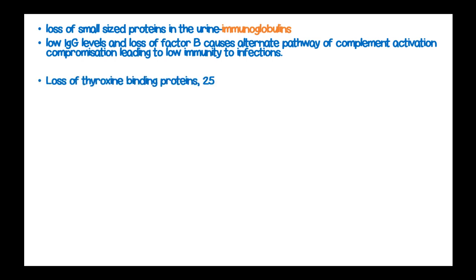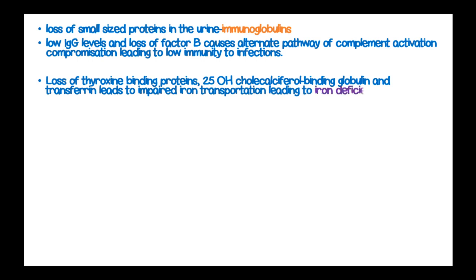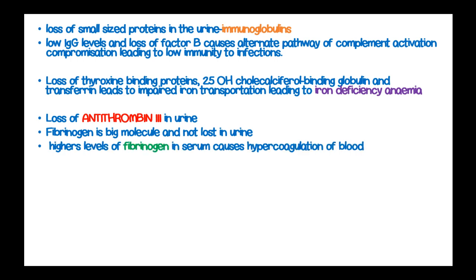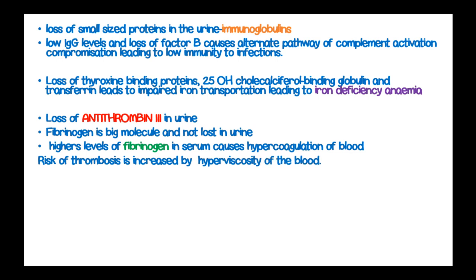Loss of thyroxine binding proteins, 25-OH-cholecalciferol binding globulin, and transferrin leads to impaired iron transportation causing iron deficiency anemia in patients with nephrotic syndrome. Loss of antithrombin-3, an anticoagulant, into urine — while fibrinogen is retained because it is a large molecule — results in high levels of fibrinogen in blood, causing hypercoagulation and placing these patients at risk of thrombosis due to hyperviscous blood.